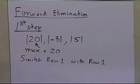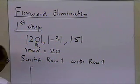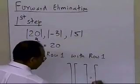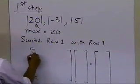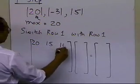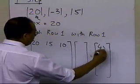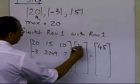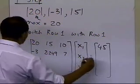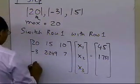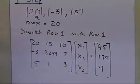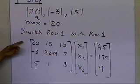So what that means is that we need to switch row 1 with row 1, because that's where the maximum element (20) is. Nothing has actually changed, but to follow the algorithm, I write down the coefficient matrix after this swap: 20, 15, 10 | 45; then -3, 2.249, 7 | 1.751; then 5, 1, 3 | 9.